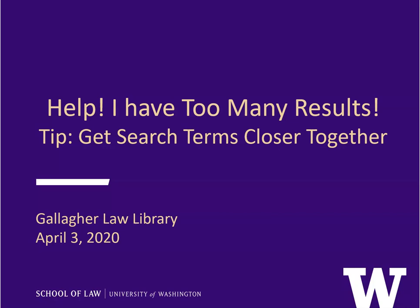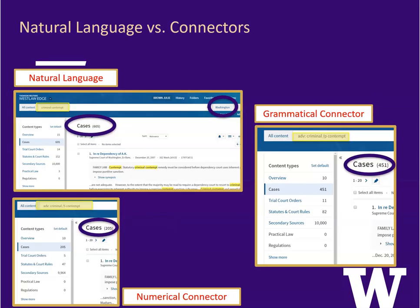Hello, this is Julie Brown and I am a Law Librarianship Intern with the Gallagher Law Library. The topic of this video is how to reduce your search results by getting your search terms closer together. Let's start by comparing three searches done on Westlaw for criminal contempt, limiting the jurisdiction to Washington State.